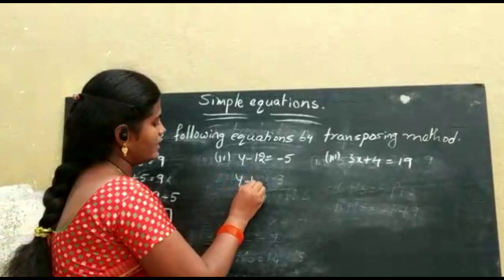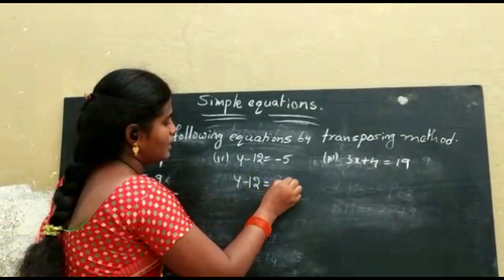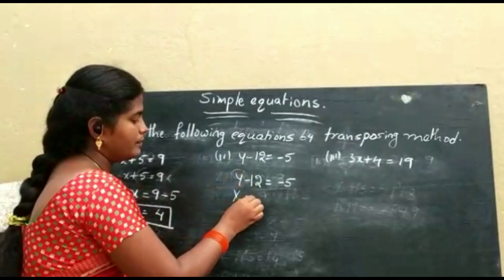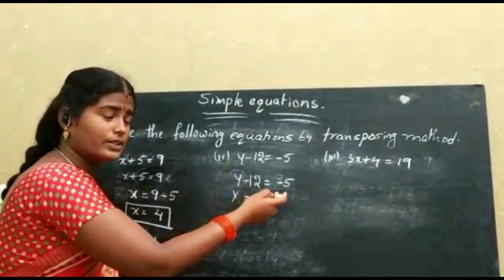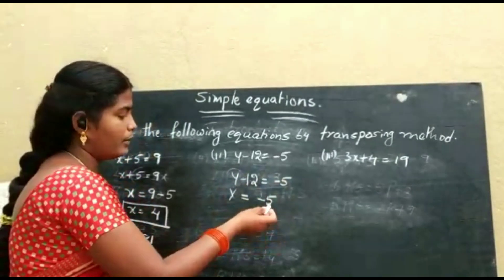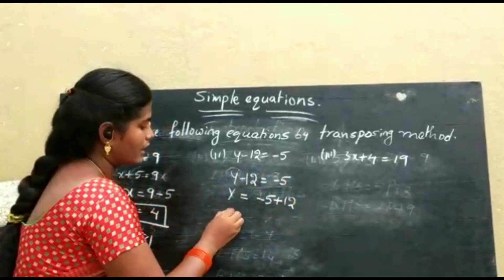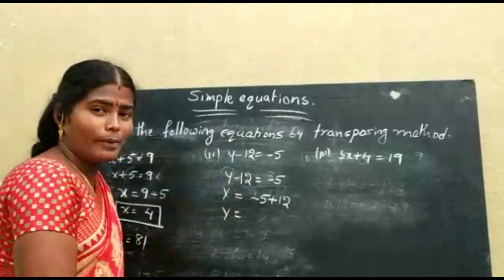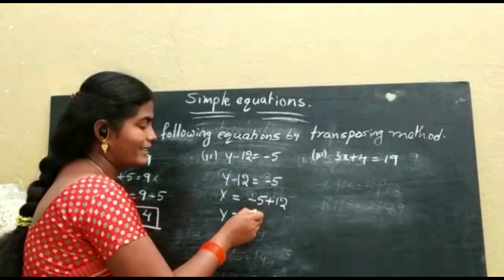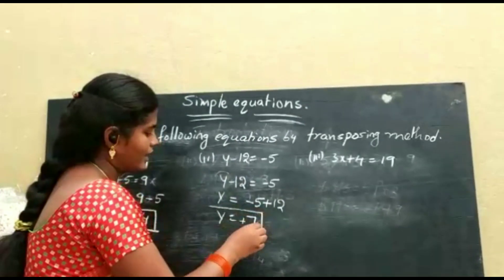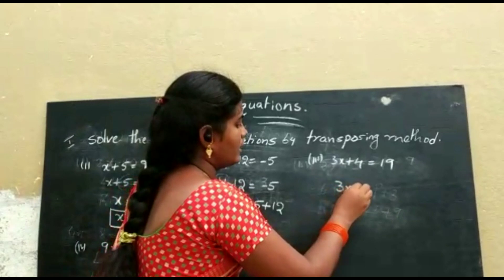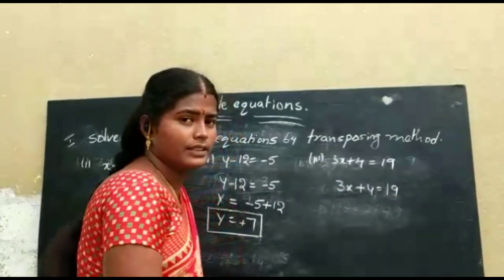Next, given equation: y minus 12 is equal to minus 5. Transposing minus 12 to the RHS, it becomes plus 12. So y is equal to minus 5 plus 7, giving y equal to 7.